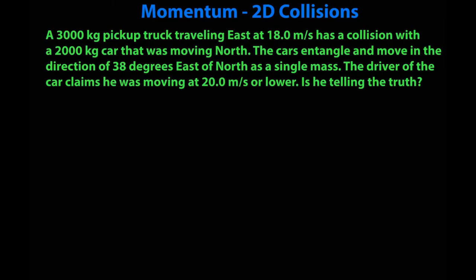First, a 3,000 kilogram pickup truck traveling east at 18 meters a second has a collision with a 2,000 kilogram car that was moving north. The cars entangle and move in the direction of 38 degrees east of north as a single mass. The driver of the car claims he was moving at 20 meters per second or lower. Is he telling the truth? Okay, the one big difference in technique here I recommend is to actually create your givens list in the drawing. So I'm going to describe to you what that drawing should be. A 3,000 kilogram pickup truck traveling east at 18 meters a second. I'm actually going to draw that vector.